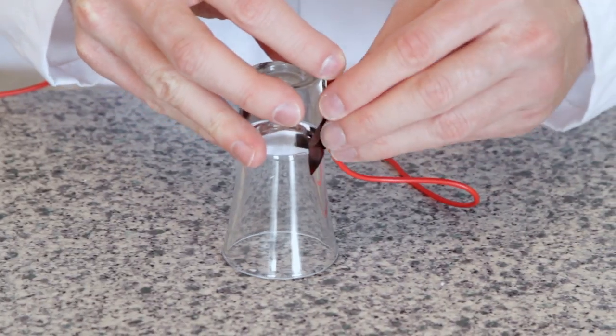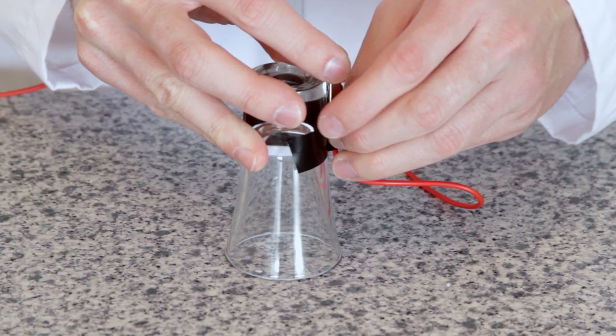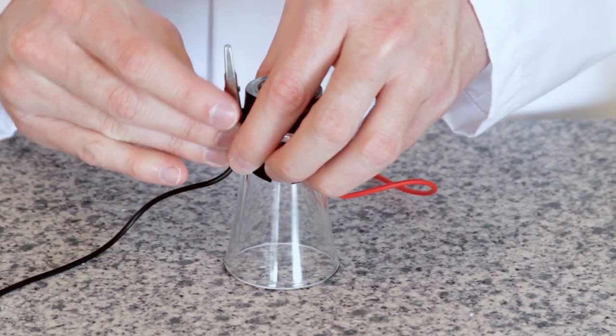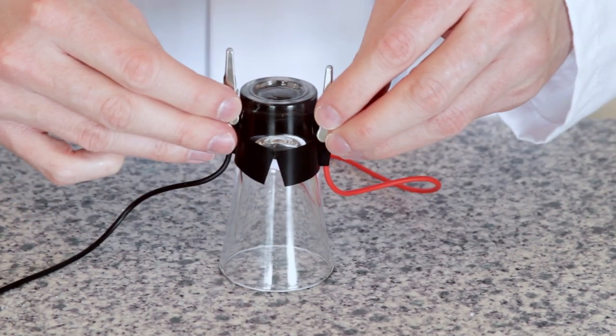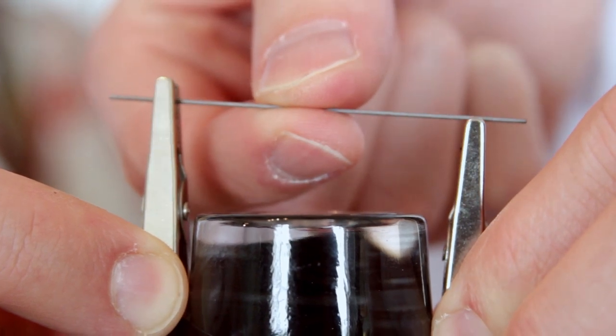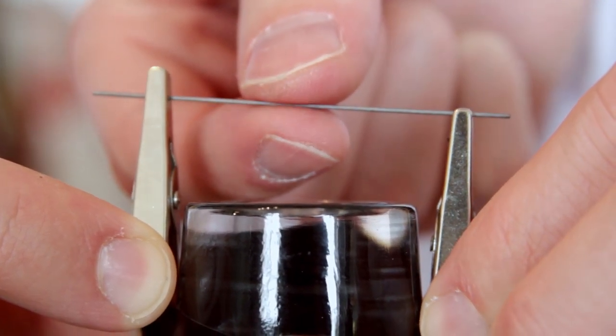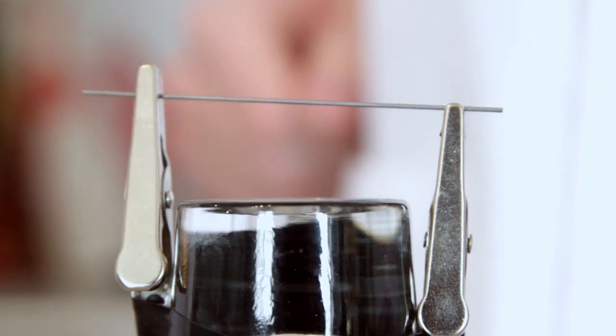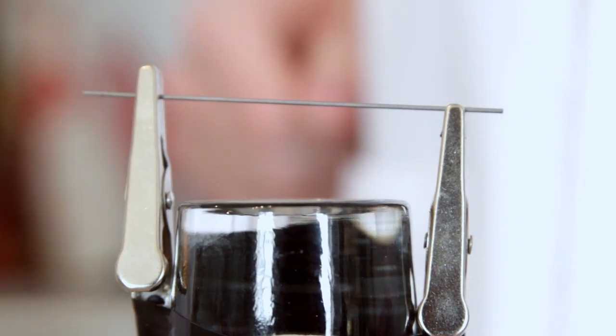Take your shot glass and tape one of the alligator clips to its side. Then, tape the second alligator clip to the other side. Make sure the clips are facing up. Carefully place a graphite pencil refill between the two alligator clips and clip it in. Be careful not to break this pencil refill. If you break the refill, replace it with a new one.